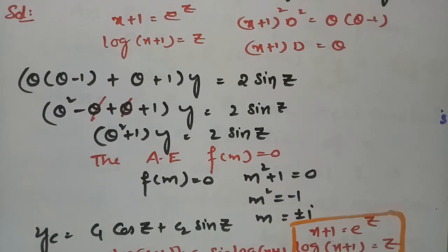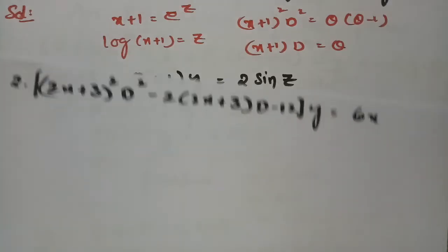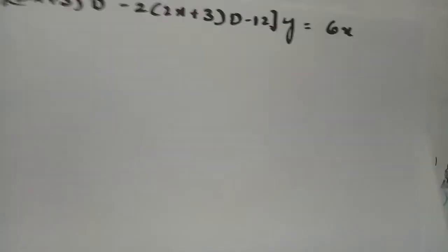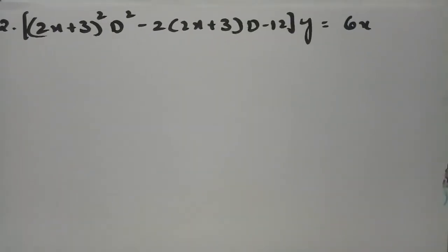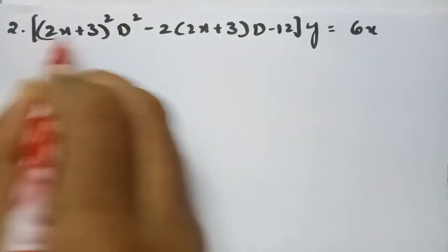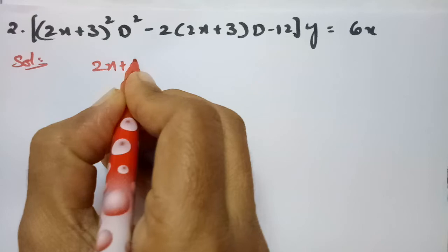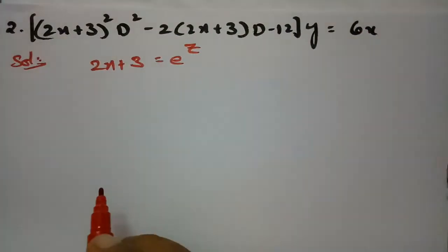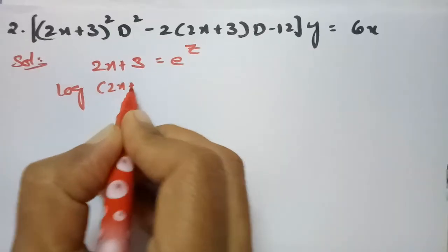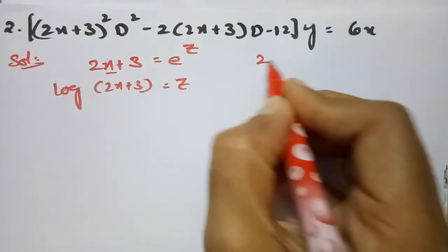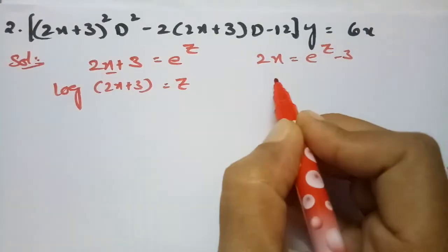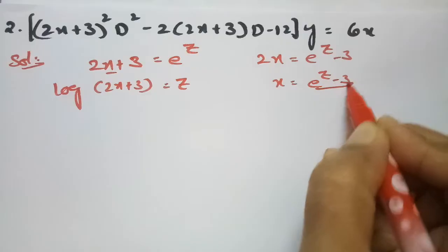This is the same process as Cauchy's Euler equation. The next equation is also a Legendre's equation and is equally important. For the solution, we substitute 2x + 3 = e^z, so log(2x + 3) = z. Also, 2x = e^z - 3, giving x = (e^z - 3)/2. We need the x value since we have 6x on the right-hand side.